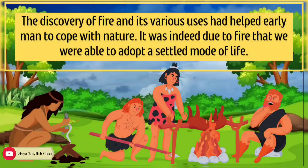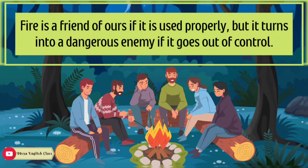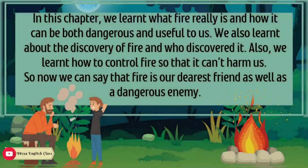The discovery of fire and its various uses helped early man to cope with nature. It was indeed due to fire that we were able to adopt a settled mode of life. Fire is still worshipped in many parts of the world because people are grateful for its benefits and also scared of the damage it can cause. Fire is a friend if used properly, but turns into a dangerous enemy if it goes out of control. In this chapter, we learnt what fire really is, how it can be both dangerous and useful, the story of its discovery, and how to control fire so that it cannot harm us.